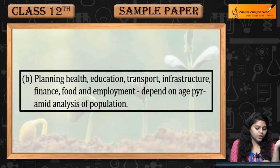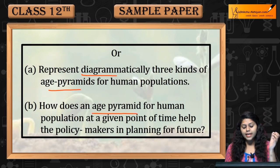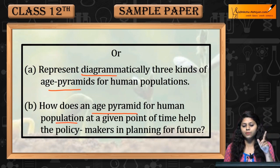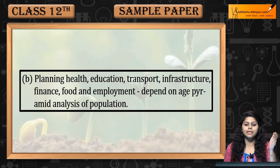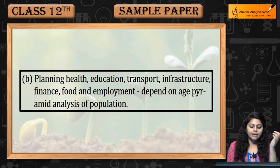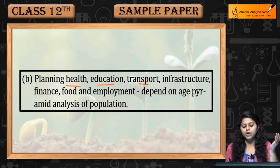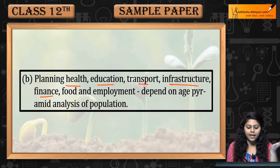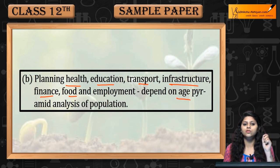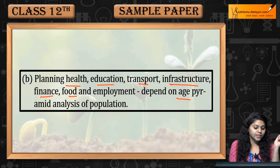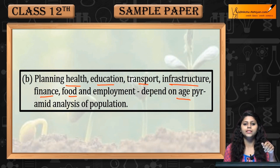The next question: how does an age pyramid of a human population at a given point of time help policy makers in planning for the future? Planning for health, education, transport, infrastructure, finance, food, and employment all depend on the age pyramid analysis of the population. This was question number 26.